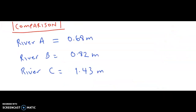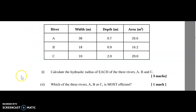From this information we can see river A has the lowest hydraulic radius, river B is 0.82, and river C has the highest value of 1.43.